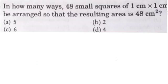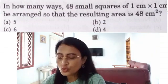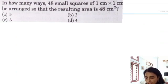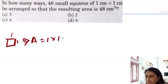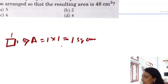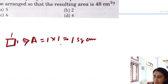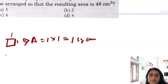In how many ways can 48 small squares be arranged? The question is very interesting. We draw a square cell — a large square cell. The length and breadth is 1 centimetre, so the area is 1 × 1 = 1 square centimetre. Here, 48 cm² is the area which covers all the squares.